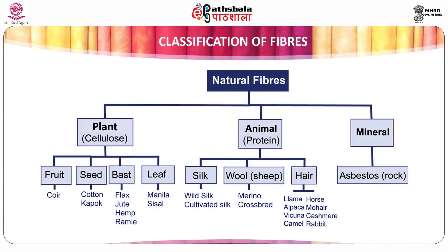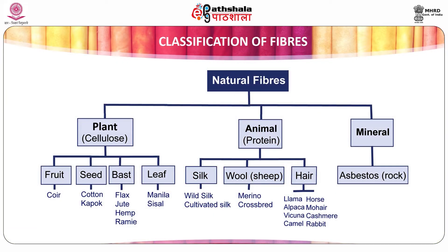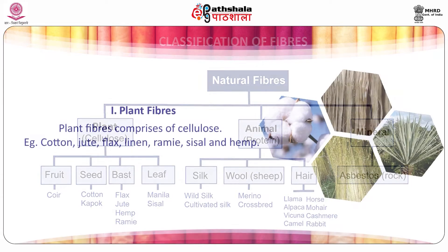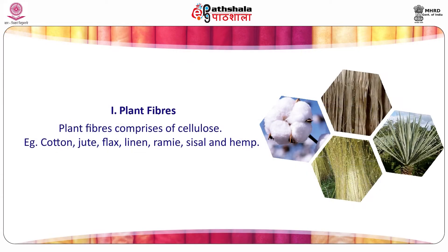Classification: The term natural fiber covers a broad range of fibers obtained from natural sources such as plant, animal and mineral. Plant fibers comprise cellulose — for example, cotton, jute, flax, linen, remy, sisal and hemp.